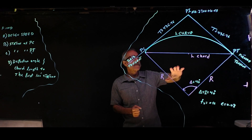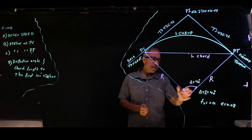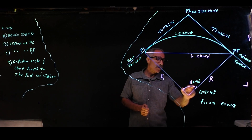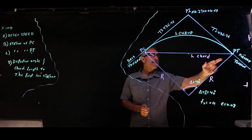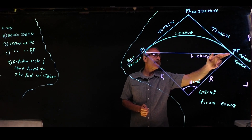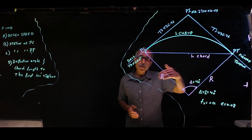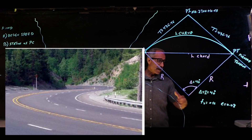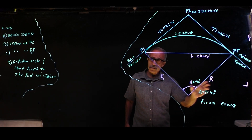A horizontal curve usually looks like this: we have the radius and the angle between the radii. In this problem, the intersection angle is 40 degrees. This will be the length of the long chord, this will be the length of our curve, and this is our tangent. They also tell us the pavement has a friction of 0.12 and the cross slope of the roadway is about 8%.